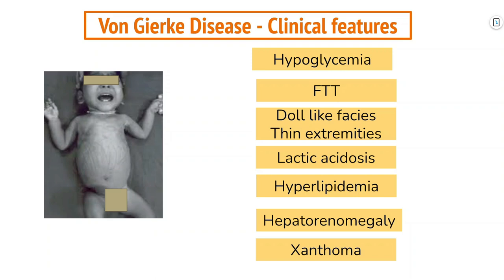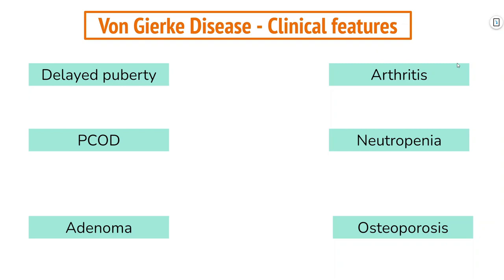In this disorder there will be hypoglycemia, failure to thrive, doll-like facies, thin extremities, lactic acidosis, hyperlipidemia, hepatorenomegaly but no or little splenomegaly, short stature, and xanthomas — deposits of cholesterol beneath the skin. People with this disorder may also experience delayed puberty and thinning of bones leading to osteoporosis.